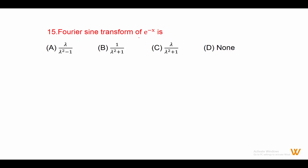Fifteen: the Fourier sine transform of e raised to minus x is. We know the formula: Fs of e raised to minus ax equals lambda upon lambda squared plus a squared. So the Fourier sine transform of e raised to minus x is lambda upon lambda squared plus 1.